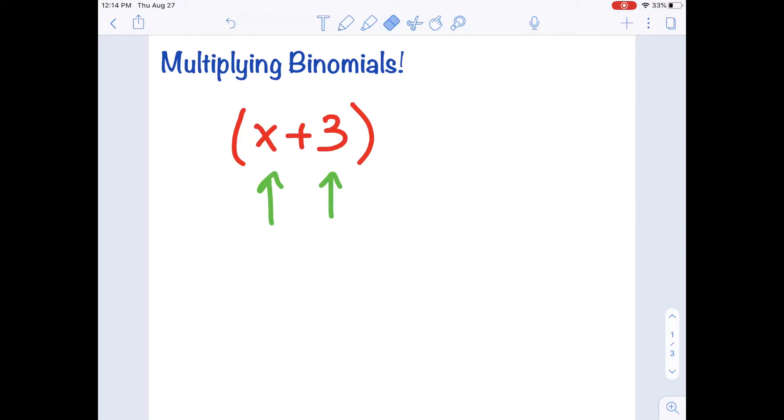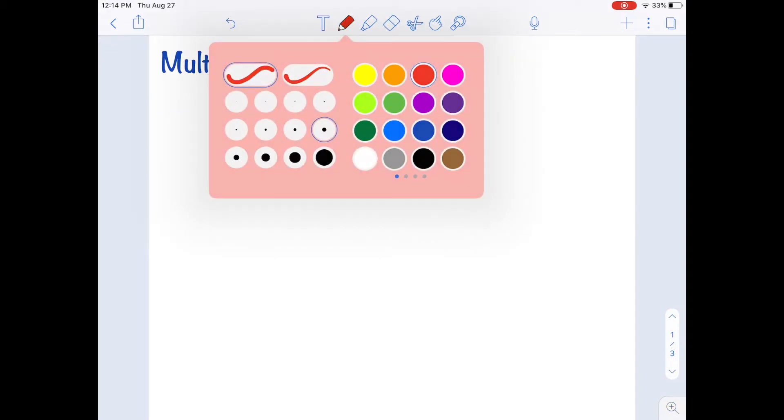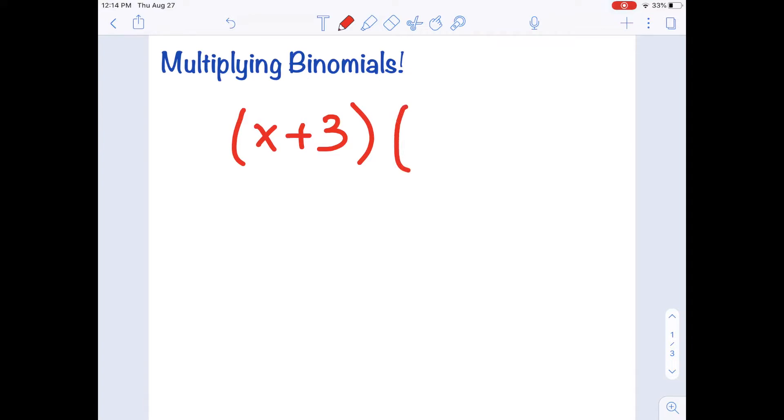But today we're going to be looking at two binomials. So I'll use another binomial. Maybe let's say x plus 7. And we are going to multiply these two binomials together.